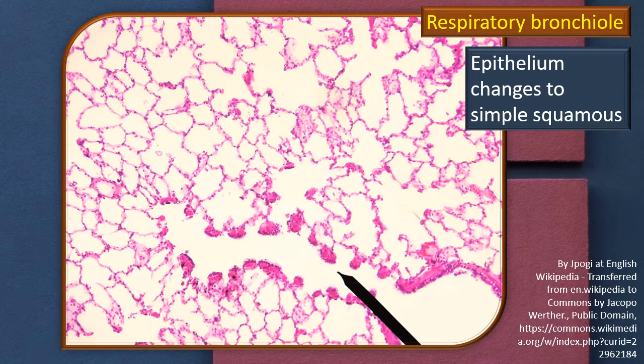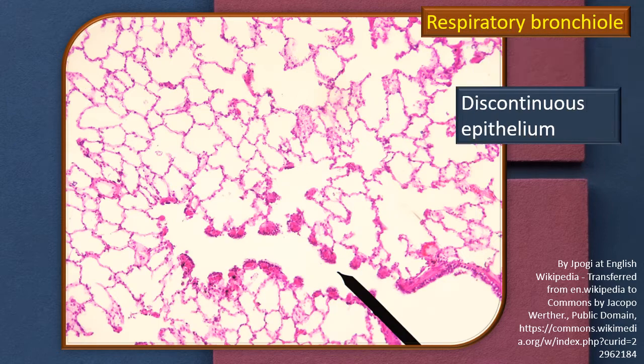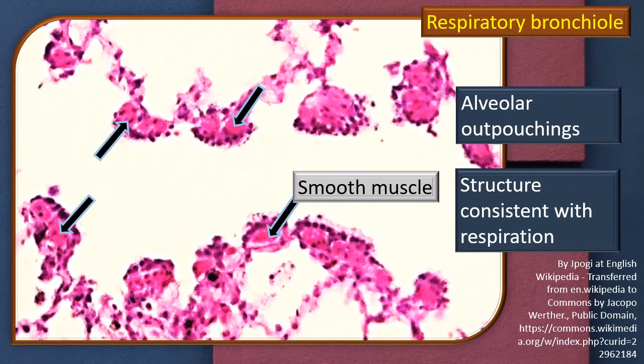The epithelium has changed to simple squamous — it is a discontinuous epithelium. Those small blobs projecting into the lumen, located in between the alveolar outpouchings, are consistent with respiration. These pouches are not only lined by a thin epithelium, but deep to it, in the core of these blobs, smooth muscle fibers are located. This is a very important signature feature of a respiratory bronchiole.